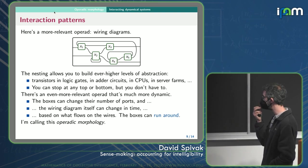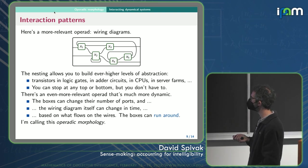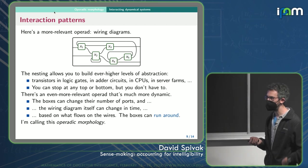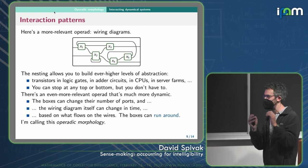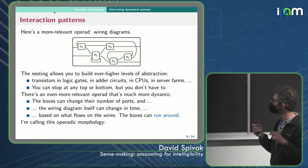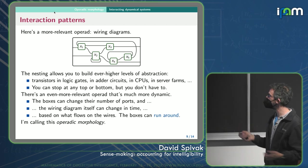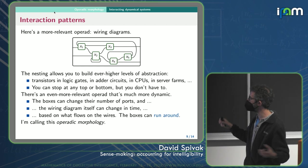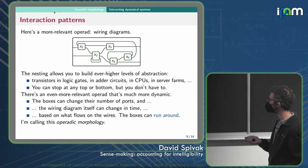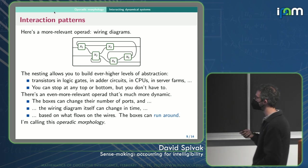So there's an even more relevant operad to sense making, I think, that's much more dynamic. Namely, the boxes in this thing can change their number of ports. So I can close my eyes. I can open my eyes. When I'm opening my eyes, I'm seeing you, getting data in. And when I close my eyes, I'm no longer getting that type of data. And if I wanted to, I could leave the room. We're going to leave each other soon. And we go our separate ways. And so what basically the way this operad works is it's like a wiring diagram operad, except that the wiring diagram itself can change in time. And it changes based on what flows on the wires.